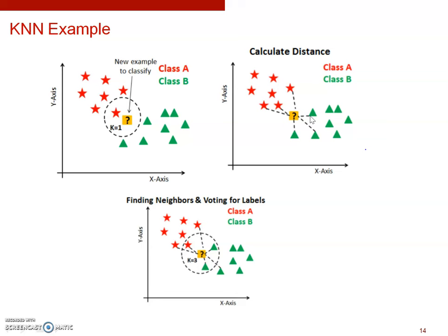If K equals 3, we find the three instances from the training dataset most similar to the new instance. Among all training instances, the star and two triangles are closest to the new instance. Out of these three, two instances belong to class B and one belongs to class A, so the majority class is class B, and class B is assigned to the new instance.